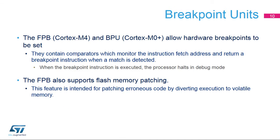The Cortex-M0 processor core has 8 comparators allocated to instruction fetch address matching. The Cortex-M4 processor core has 6 comparators for instruction fetch address matching and 2 for literal load address matching — in other words, data reads to code space. The latter can only be used for patching.